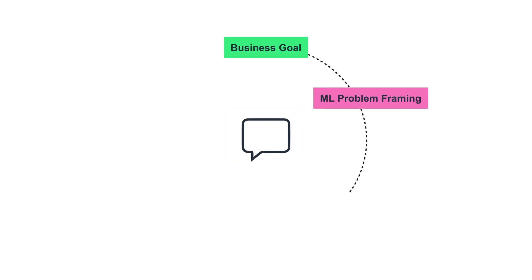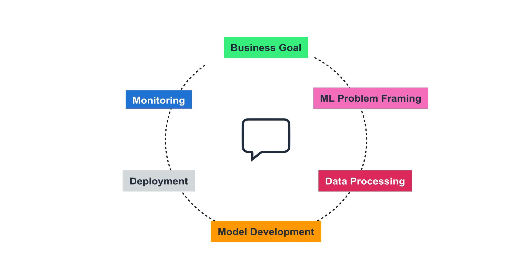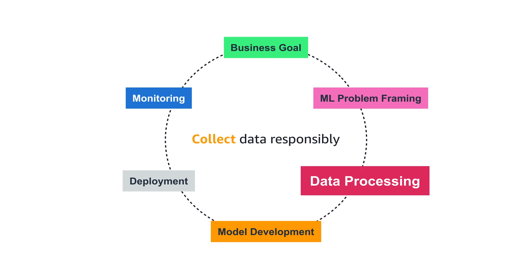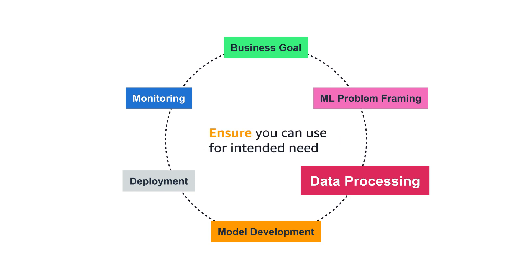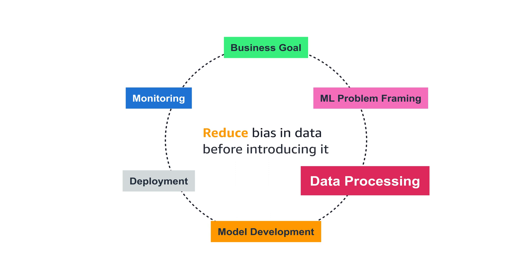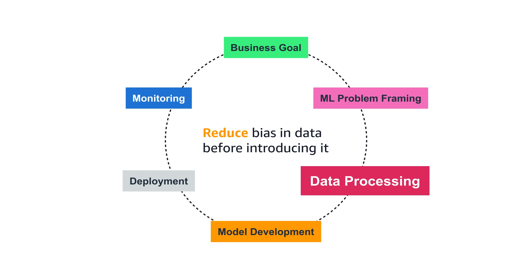For example, imagine you want to build a conversational interface like a chatbot that uses user feedback to continuously improve over time. By doing so, the data from your users becomes an integral part of the model development cycle. It's your responsibility to collect this data responsibly, ensure that you can use it in the intended way, and reduce any bias that is or might be in the data before introducing it back into the model development lifecycle.